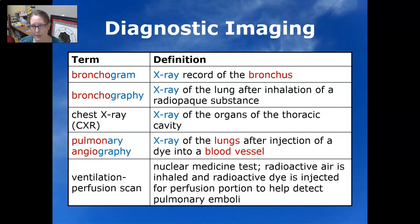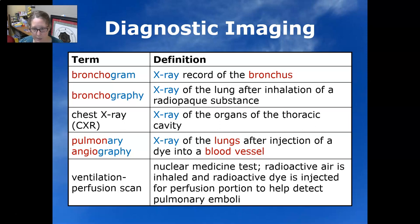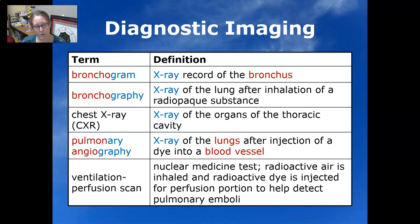Now let's look at some diagnostic imaging tests. A bronchogram is an x-ray record of the bronchus. Bronchography is an x-ray of the lung after the inhalation of a radio-opaque substance. A chest x-ray, or CXR, is an x-ray of the organs of the thoracic cavity — usually we're looking at the lungs, but you can also see the heart and other structures.